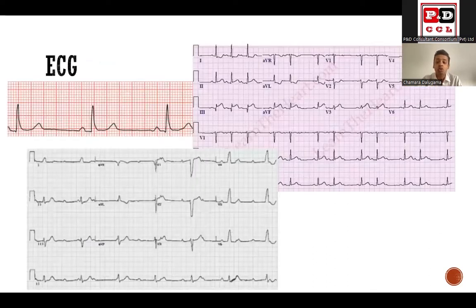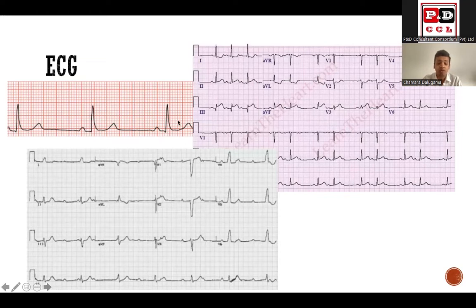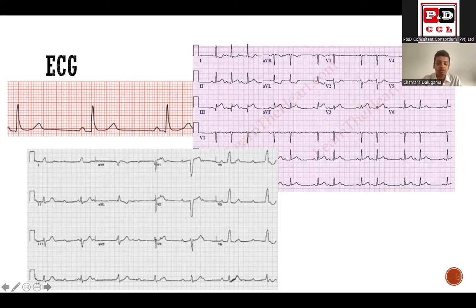Now we have done the twin lead ECG. The first ECG shows a P wave followed by a QRS complex and T wave, but the rate is very low - this is sinus bradycardia, which can happen after inferior MI. The second ECG shows a 2-to-1 AV block. The third ECG shows a complete heart block. So you can have sinus bradycardia, first degree heart block, but higher degree heart blocks - 2-to-1, 3-to-1, and complete heart block - can all happen after inferior myocardial infarction.